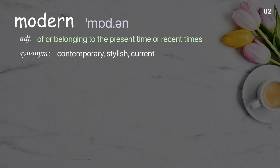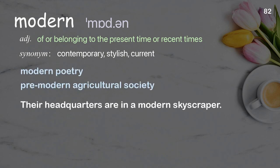Modern: Of or belonging to the present time or recent times. Examples: Modern poetry, pre-modern agricultural society. Their headquarters are in a modern skyscraper.